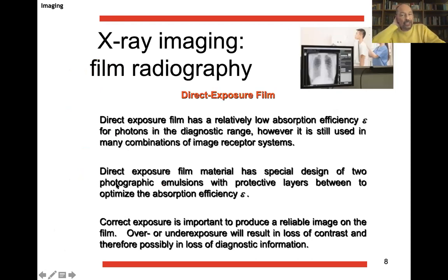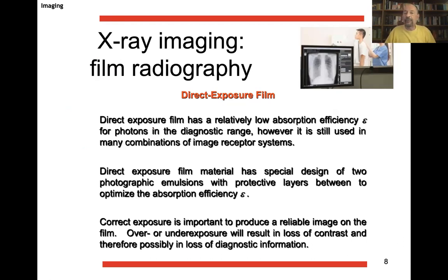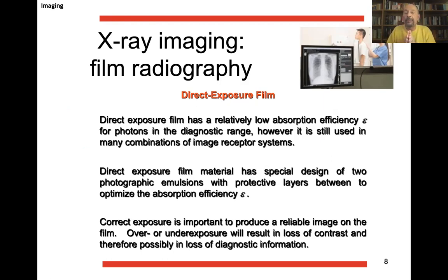X-ray imaging — so-called film radiography — is still extremely popular. Traditionally done with films, you actually expose film and still do so many times, holding the cassette with the film inside. The direct exposure film has a relatively low absorption coefficient epsilon for photons in the diagnostic range. They have a special design of two photographic emulsions with protective layers in between to optimize the absorption coefficient. Correct exposure is important; over- or underexposure results in loss of contrast and possibly loss of diagnostic information.